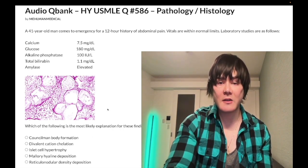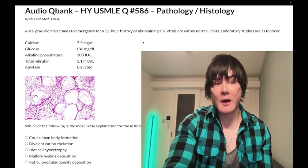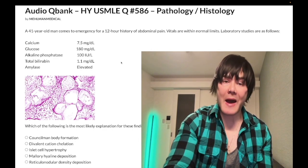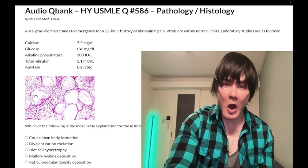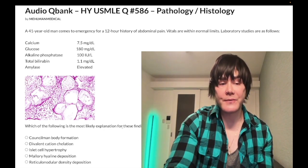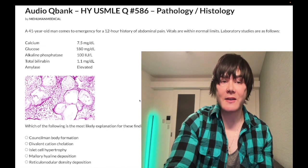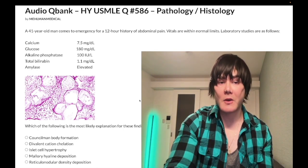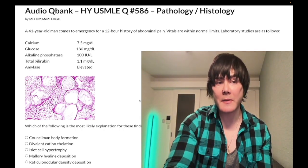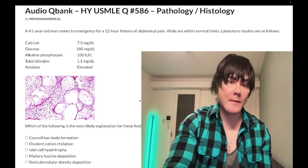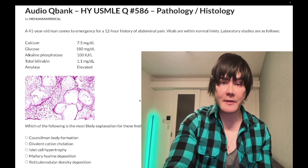Answer choice B, divalent cation chelation, is the correct answer. This is acute pancreatitis. They don't have to say the pain radiates to the back, or that the patient is an alcoholic — just abdominal pain is enough. Divalent cation refers to calcium chelation via fat saponification.